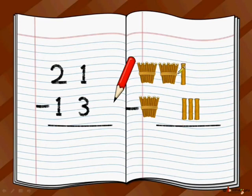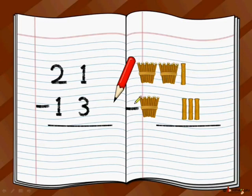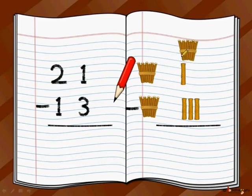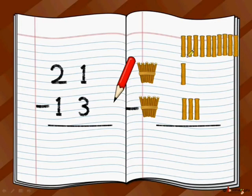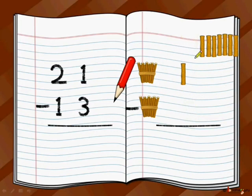Start with the 1s place as usual. Here we have 1 stick minus 3 sticks — from 1 stick we cannot take away 3. So what we are going to do here is borrowing. We are going to borrow 1 ten from the bundle. So now we have borrowed 1 tens bundle — yes, it is 10 sticks. So now we have 10 and 1, which is 11 sticks minus 3 sticks. Now we can take away 3 sticks from 11, and the leftover is 8.